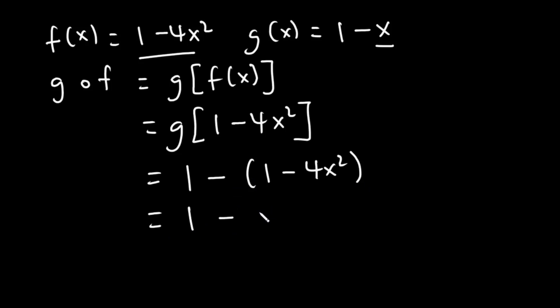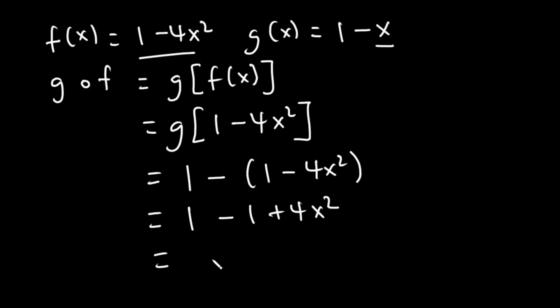Distributing the negative: negative 1 times 1 is -1, and negative 1 times -4x² is +4x². So 1 - 1 = 0, and g(f(x)) = 4x².